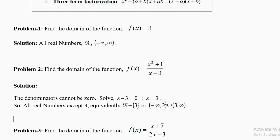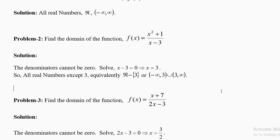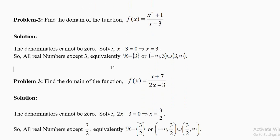Whenever a number is not allowed in the interval, we write it with a round bracket. A square bracket means the number is allowed. Plus infinity and minus infinity are not fixed numbers, so we always put round brackets for them. Please learn to write the domain in all three ways: in words, using set notation ℝ − {3}, or in interval form.